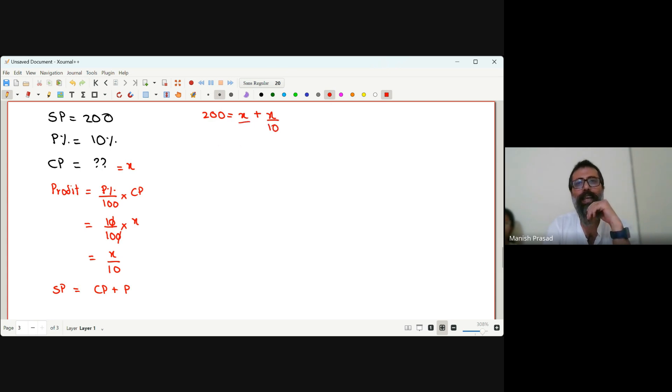We take the LCM. When we take the LCM, this will be multiplied by 10, so it becomes 10x plus x by 10. So it becomes 200 equals 11x by 10. Now 10 goes to the other side multiply, 11 goes to the other side divide, so it becomes 2000 by 11.